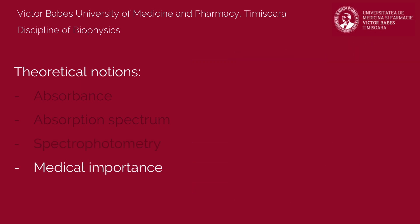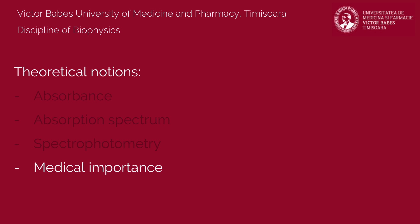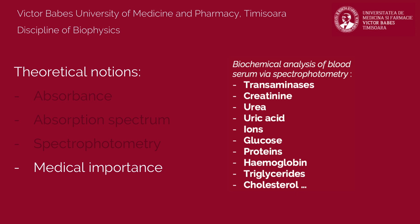The spectrophotometry method is widely used in medicine to identify clinical compounds and measure their concentration, to measure the speed of some biochemical reactions, and many others. Using this method, multiple biochemical compounds from human serums can be identified, such as transaminases, creatinine, urea, ions, glucose, protein, hemoglobin, and so on.